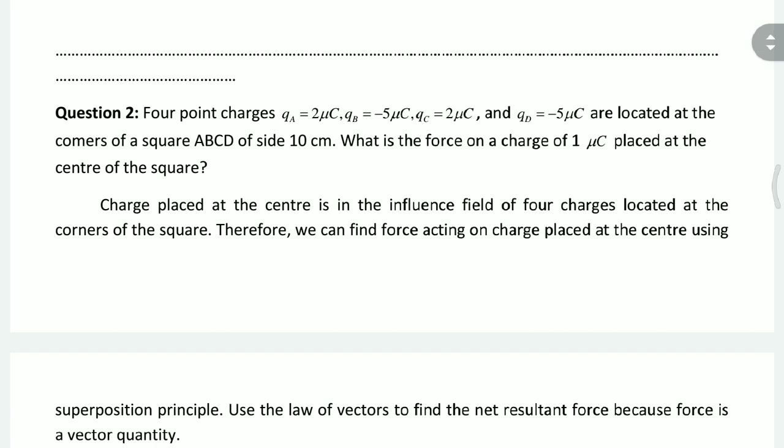The next question: there are 4 point charges — 2 microcoulomb, 5 microcoulomb, minus 2 microcoulomb, and minus 5 microcoulomb — placed at the corners of a square shape. The point charges are named ABCD, with a side length of 10 cm.